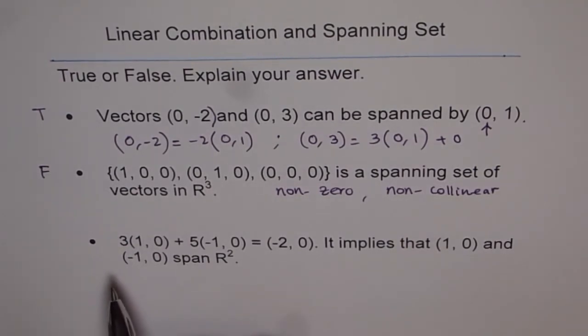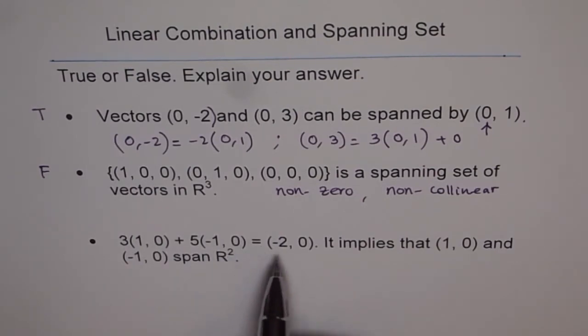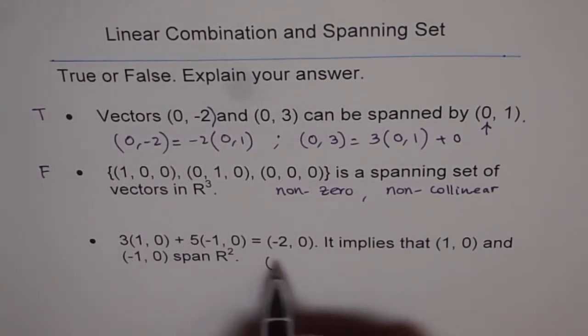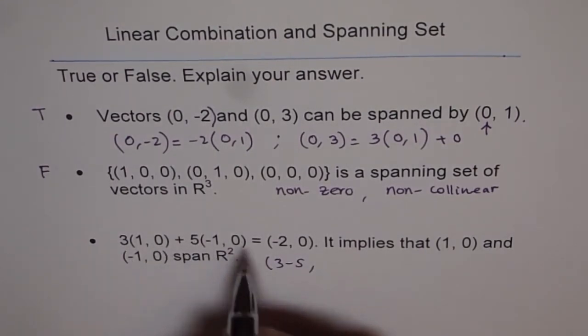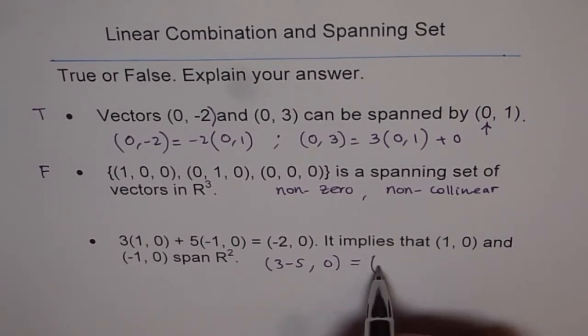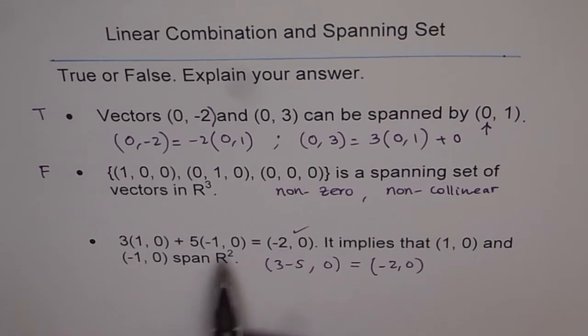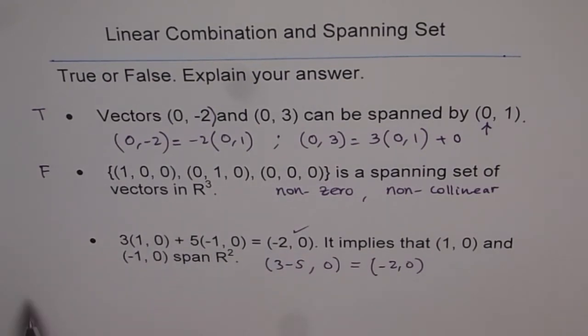Now part 3 of this is 3 times (1,0) plus 5 times (-1,0) equals (-2,0). Let's check if it is true. So we get 3 times, so we can write this as (3-5, 3×0+5×0). That is equal to (-2,0). So that is correct. Now, so that means we have shown here that (-2,0), this vector can be written as a linear combination of these two vectors.